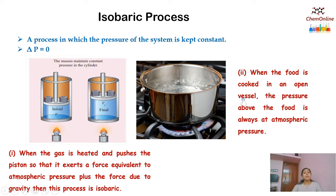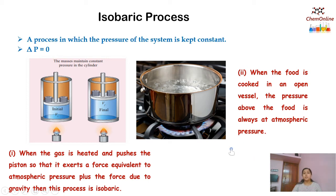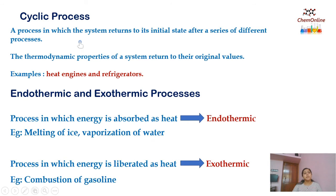Another example we can see in daily life is when we are boiling water or cooking food in an open vessel. The pressure above the food will always be at atmospheric pressure, which is constant. Such processes, where the pressure of the system is kept constant, are called isobaric processes.